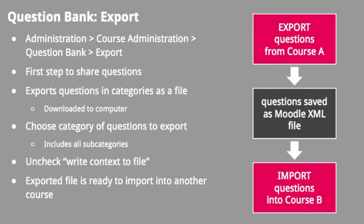To share a category of questions from one course to another, the first step is to export the questions from the course which has the questions. The questions are saved as a Moodle XML file which is then imported into the second course. The questions are added to the second course question bank. Questions which are exported from one course and imported into another course are not linked. Users may edit questions in either course and will not affect the questions in the other course.